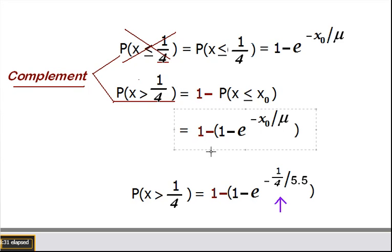So here I've rewritten it, one minus, and then the formula for the probability. I can substitute in, I've got my one-fourth hours, and I'm dividing by 5.5, which was the value of mu that was given to us. So you can see that's there.